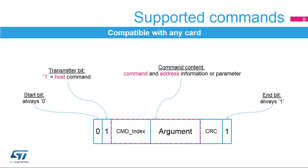The SDMMC controller offers high flexibility for configuring the command indexes and arguments. With a flexible 32-bit register for configuring arguments and an independent 6-bit field for the command index, this architecture ensures that the firmware can address any type of card. The command path state machine is able to generate all command tokens with no restrictions on command index nor argument. In addition, the start bit, transmitter bit, CRC, and end bit fields are automatically generated and sent on the bus.